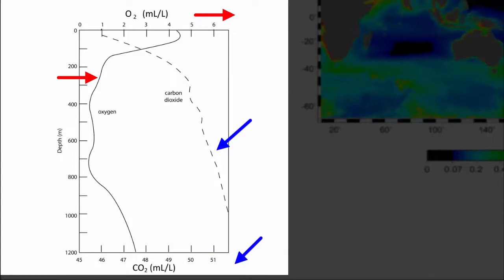For oxygen gas, values range from 0 on the left to 6 milliliters per liter on the right. For carbon dioxide, values are much higher, ranging from 46 milliliters per liter at the lowest to more than 52 milliliters per liter at the highest.